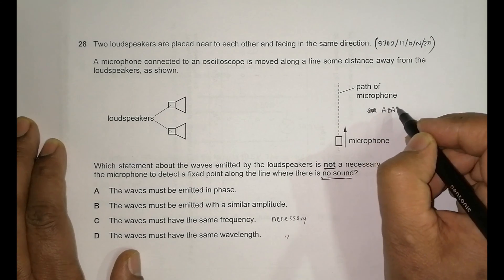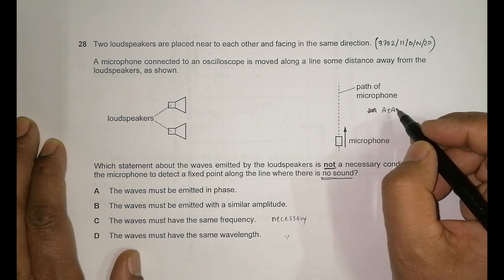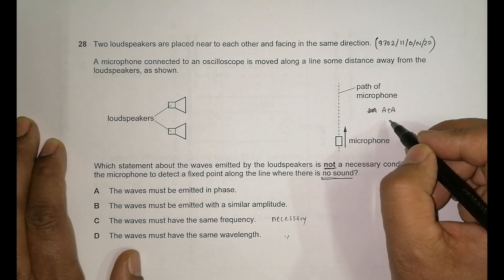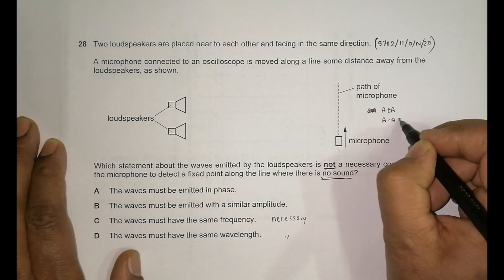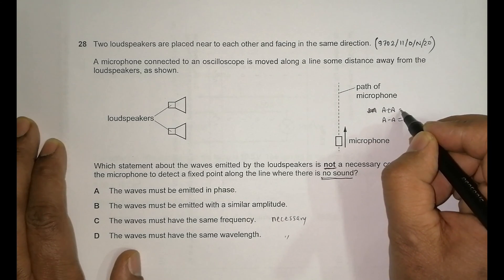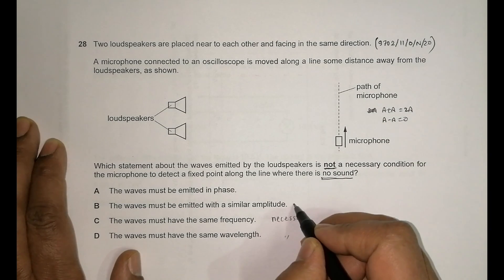This is because of A plus A, and if opposite, the crest of one lies with trough of another or the trough of one lies with crest of another, in that case that will be A minus A equal to zero. So that's why the amplitude should be the same. So this also is the necessary condition.